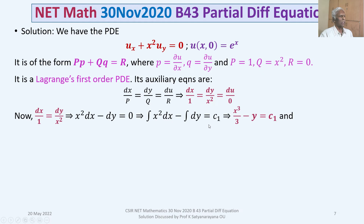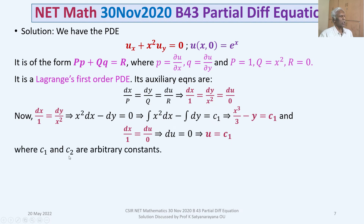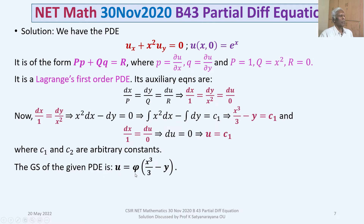Integrating gives x³/3 − y = c₁, where c₁ is an arbitrary constant. Taking the first and third equations, dx/1 = du/0, which gives du = 0. Integrating yields u = c₂, where c₂ is an arbitrary constant.